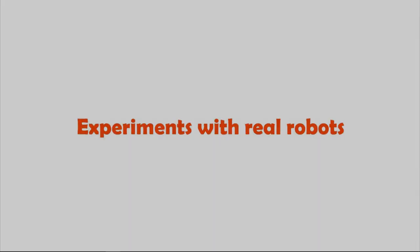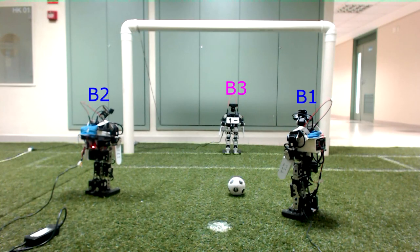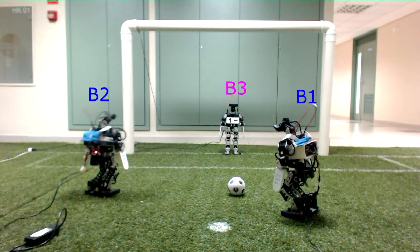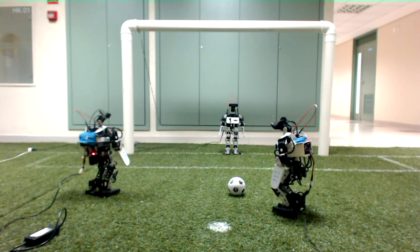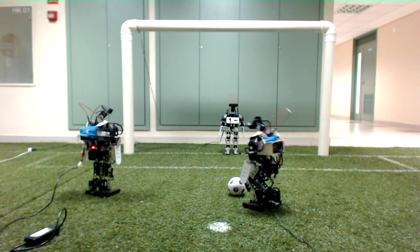In the experiments with real robots, we have changed the robot's position. B1 is the coordinator and walks to the ball, while B2 waits to receive its adapted position.